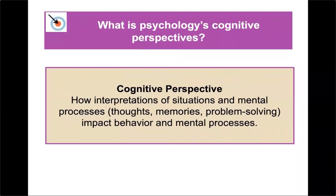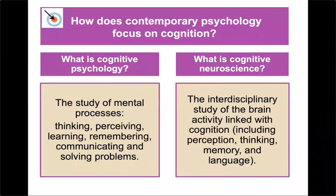How does contemporary psychology focus on cognition? Cognitive psychology is the study of mental processing — the thinking, perceiving, learning, remembering, communicating, and solving problems. We also hear a lot about cognitive neuroscience, which is an outgrowth of cognitive psychology. Cognitive neuroscience is the interdisciplinary study of the brain activity linked with cognition, including perception, thinking, memory, and language.